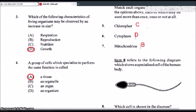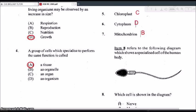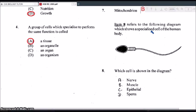Okay, so moving on to item 8. Item 8 refers to the following diagram which shows the specialized cell of the human body. So which cell is shown in the diagram? Is it A, a nerve cell, B, a muscle cell, C, an epithelial cell, or D, a sperm cell? So this is an easy one too. So you can clearly see that that is a sperm cell.